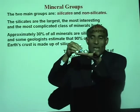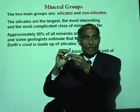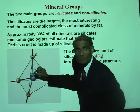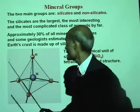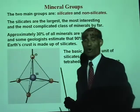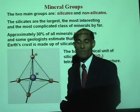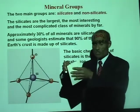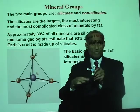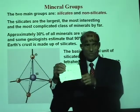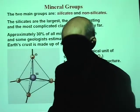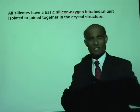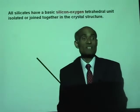You can see the silicon at the center and four oxygen atoms at the corners forming a tetrahedron — a four-faced shape. Look at the four faces one more time: one, two, three, four faces — that is why it's called the tetrahedron. All silicates have a basic silicon-oxygen tetrahedral unit. In fact, all silicates are made of this basic tetrahedral unit, and they are either isolated units or joined like a chain.